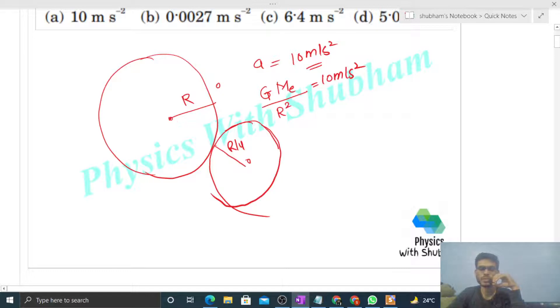So what is the distance between the two centers, center of the Earth and center of the moon? That distance will be R plus R by 4.